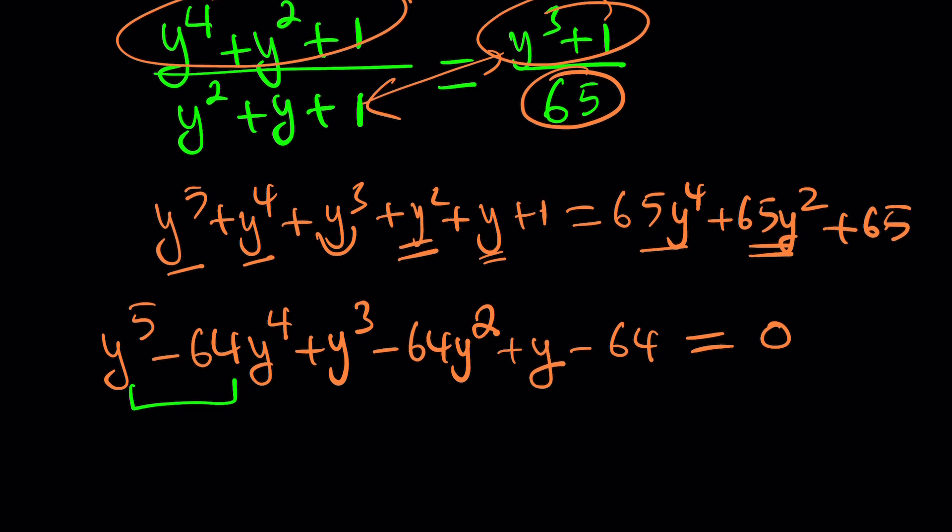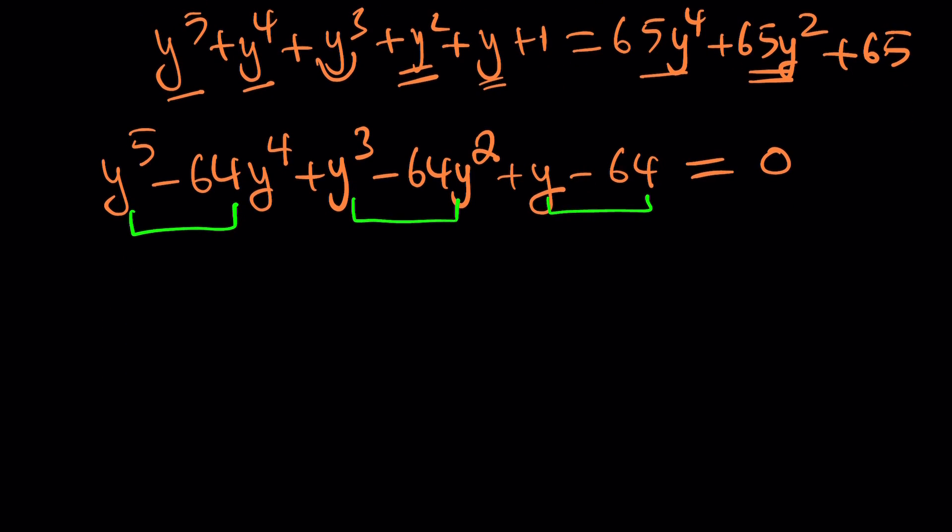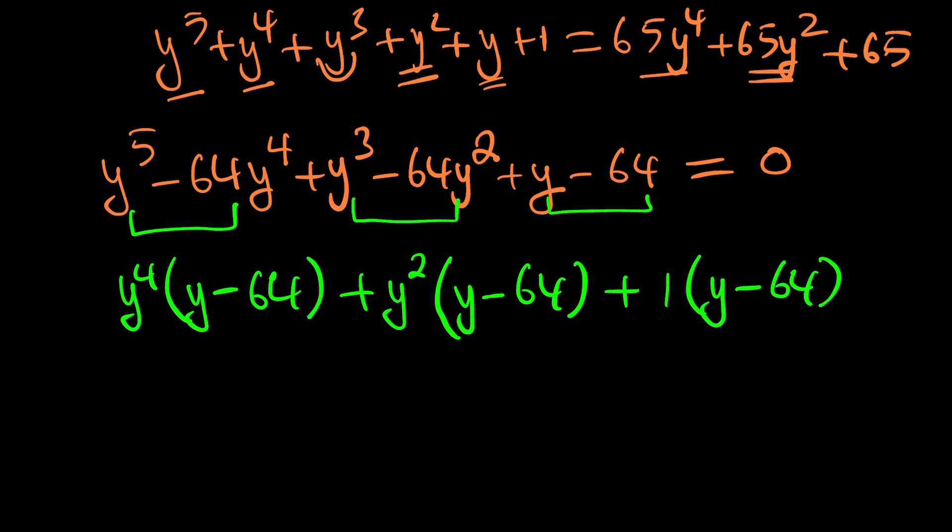We need to look for a way to factor this. If you group the terms, which is amazing, you will get a way to factor it. For example, factor out y^4 times (y - 64), that's why 64s are very important. Factor out y^2, you get y^2(y - 64), and then + 1(y - 64). You're going to get y^4 + y^2 + 1 all multiplied by (y - 64) equals 0.